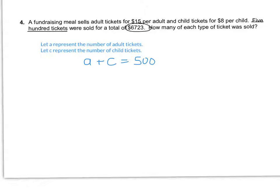The other value we have is the money amount. We know that every adult ticket costs $15, so the number of adult tickets times 15 gives the amount raised by adult tickets. The children's tickets were worth $8, so 8 times C gives the children's ticket revenue. That has to total up to be $6,723. So: 15A + 8C = 6723.